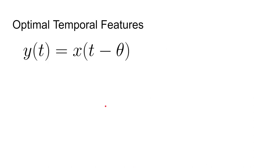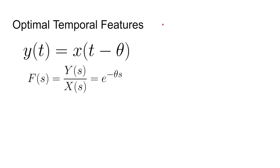So we want our network to be able to output whatever the input was theta seconds ago — this gives a mathematical definition of what we want the network to do. Can we build an optimal system? I don't know what the right features are, but given this particular math, can I straight from math figure out what would be the right thing to construct such that I have features that could do this task? Now, math is about to get weird here — depending on your background, this will either make sense or seem puzzling. One thing you can do with an equation like that is take the Laplace transform of it, which is a standard technique in control theory and engineering to characterize the relationship between output and input. We're going to do everything in continuous time and worry about discrete time later.